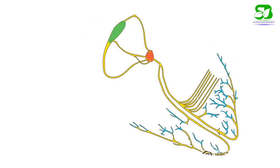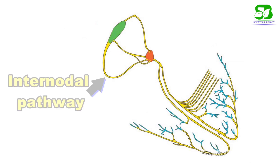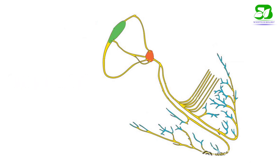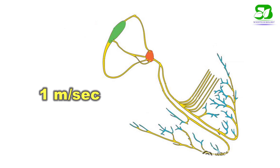The three bundles of fibers that connect the SA node with the AV node constitute the internodal pathway. The speed of conduction of impulse in the internodal pathway is also 1 meter per second.